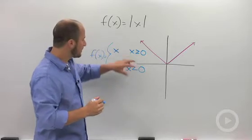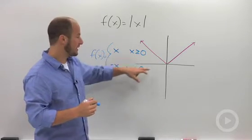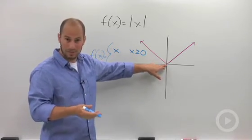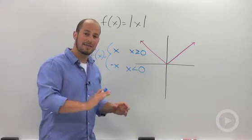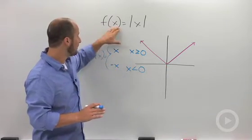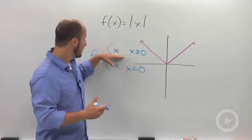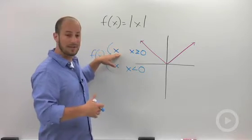We could change the equal to on either one of these because they're equal at zero. But basically what we've done is divided the absolute value of x into two different regions: the line x if we're dealing with positive numbers, which will give us this portion over here...